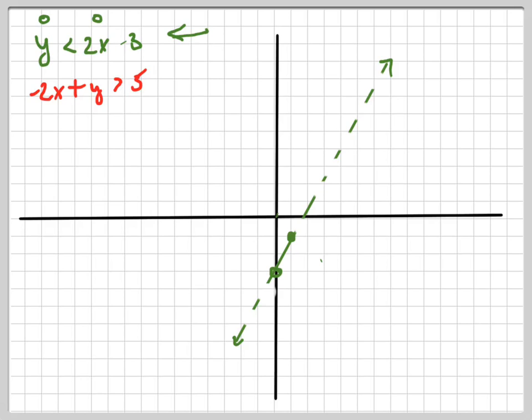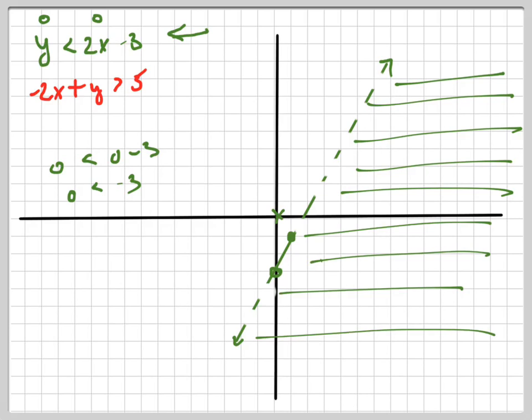Is 0 less than 0 minus 3? Is that true or is that false? 0 is less than negative 3. 0 is not less than negative 3. 0 is greater than negative 3, so that's false. That means this is not a solution, which means all the points on the other side of the graph are solutions to the inequality. So that gets shaded to the right.